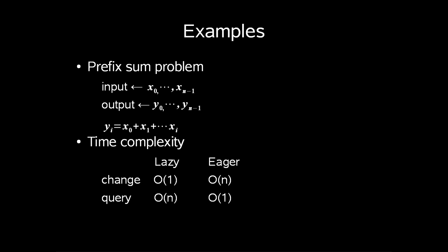In example, lazy will take constant time to change the i-th input, because we don't recalculate until we have to answer a query. When we have to answer our query, it will take us O(n) time, because we have to recalculate the i-th entrance. And of course the opposite is true for the eager approach.